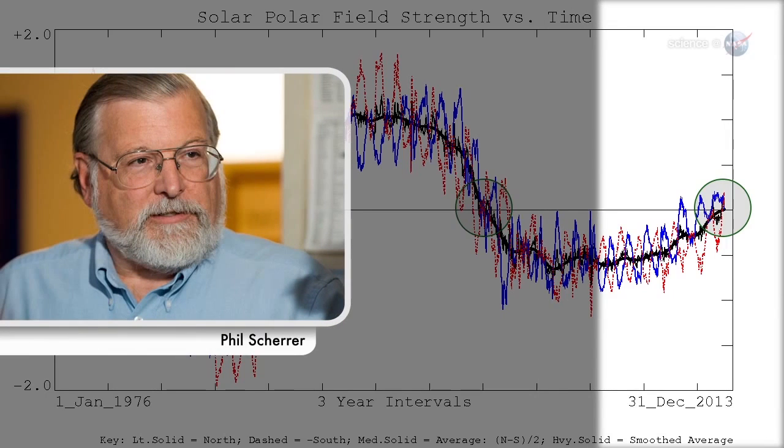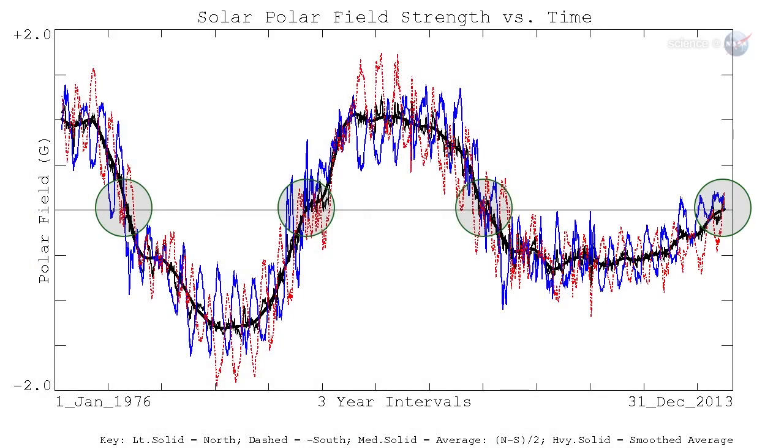Solar physicist Phil Shearer, also at Stanford, describes what happens. The Sun's polar magnetic fields weaken, go to zero, and then emerge again with the opposite polarity. This is a regular part of the solar cycle.